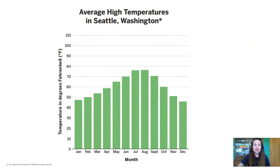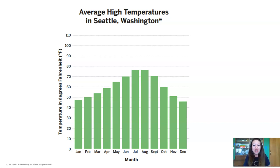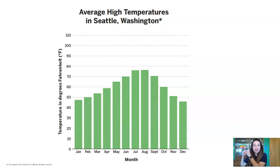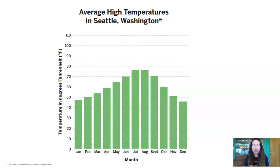Awesome. Today we're going to be talking about Seattle, Washington, which is the local weather where I live. You might live in a different place, but we're going to talk about Seattle today, and hopefully you'll get a chance to study your own local weather with your teacher. So let's take a look at this piece of data. This is a bar graph, just like all of the other bar graphs we've been studying. Look at the title of the graph — what is this showing us?